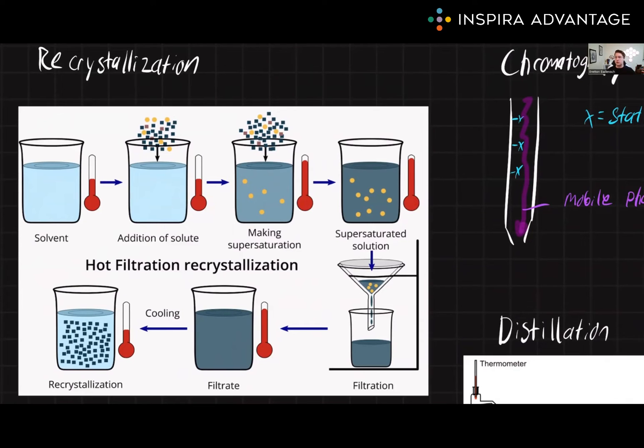Recrystallization is often used in organic chemistry labs to purify the products obtained after a reaction happens. When you're performing recrystallization, the choice of solvent is absolutely critical. The solvent must be able to, one, dissolve the product at high temperatures, but B, not dissolve the product at low temperatures.